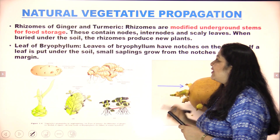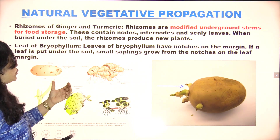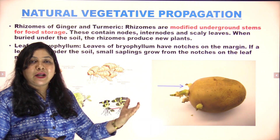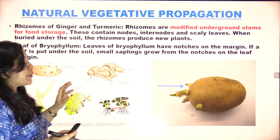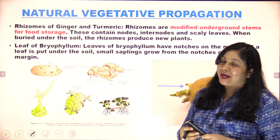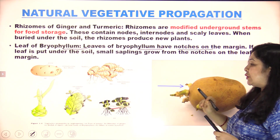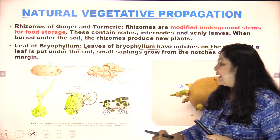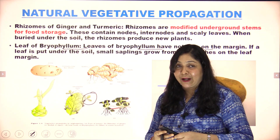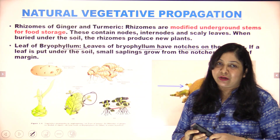Another example is the rhizomes of ginger or turmeric — these are modified stems with roots, from which you can easily grow a new plant in a short period. Using vegetative propagation cuts out the dormancy period and seedling conversion process, making growth and development faster. The leaves of Bryophyllum also have notches from which buds develop, and planting these buds in soil gives a new plant.